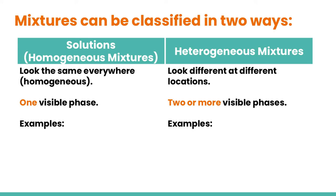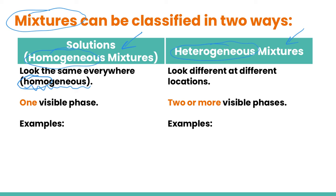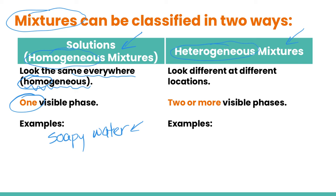Looking at the other side of our classification — going back to mixtures — mixtures can also be classified in two ways. The first way is solutions, also called homogeneous mixtures. The reason we use the word homogeneous is that 'homo' means one, so they look the same everywhere, or they have one visible phase. Soapy water is a good example here: even though soap is dissolved in the water, it would look like all one visible phase.